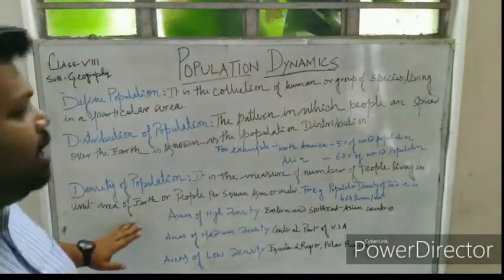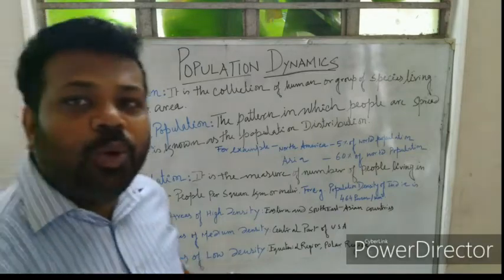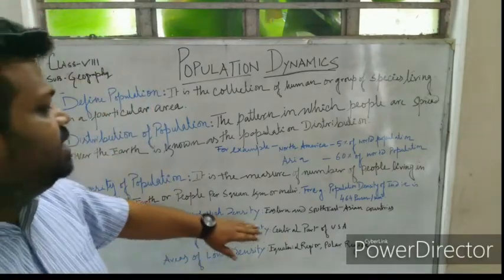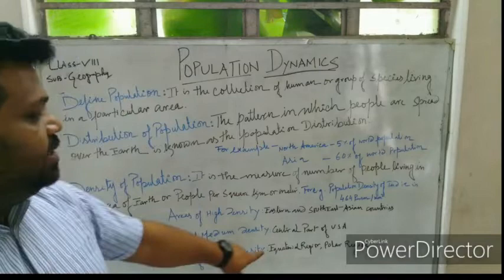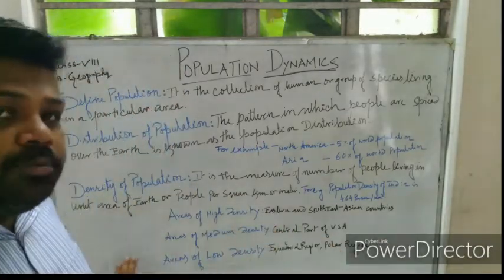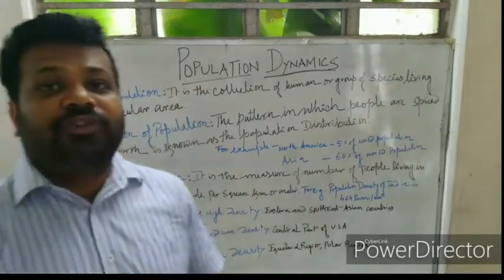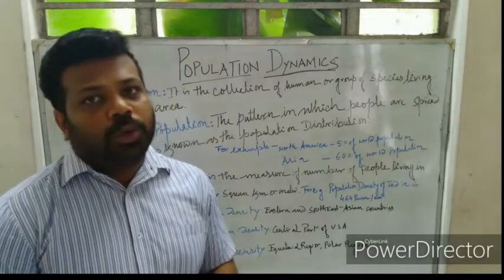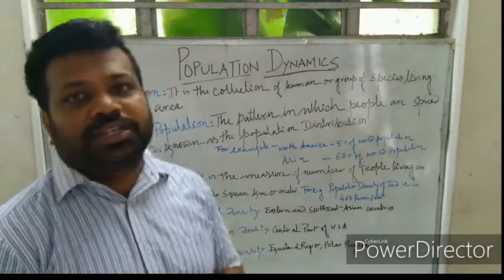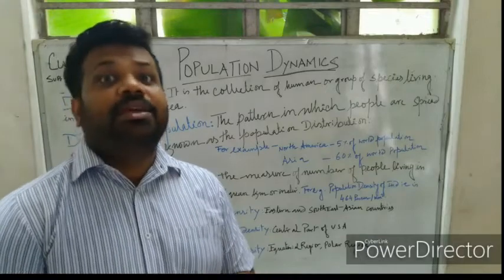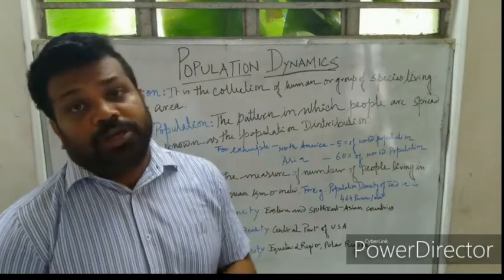We can divide the world into areas of high density, medium density, and low density. Eastern and Southeast Asian countries have very high population density. The central part of the USA has medium population density. In the equatorial region or the polar region, the population density is very low. So population density is not the same everywhere.